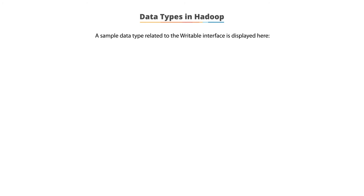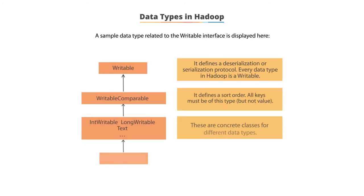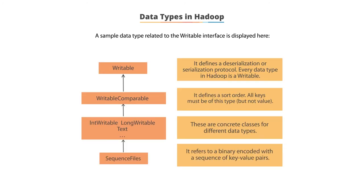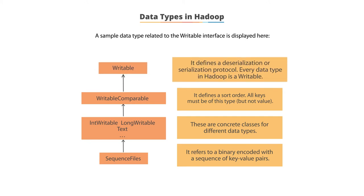This illustration shows a sample data type that you can create on your own. This data type will need you to implement a Writable interface. Writable defines a deserialization and serialization protocol. Every data type in Hadoop is a Writable.